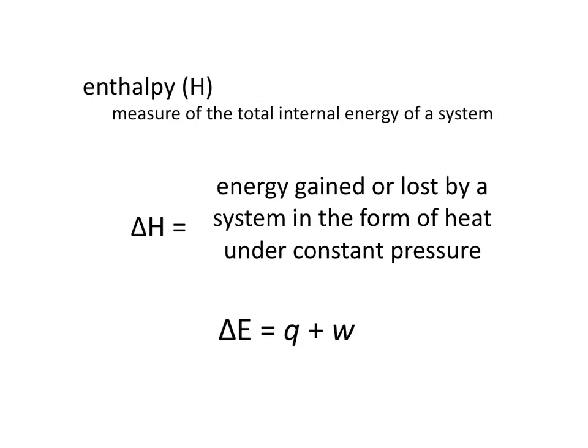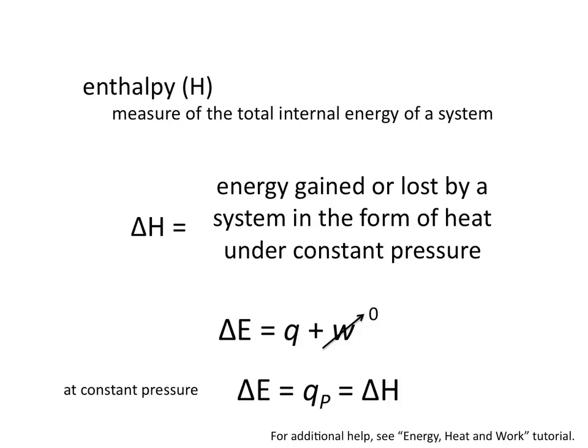At constant pressure, no work is done. So at constant pressure, the value of W is zero, which means that the change in energy is comprised entirely of the heat component, Q. And so the change in enthalpy, or delta H, is equal to the internal energy change of a system, or delta E, at constant pressure, or Q sub P.